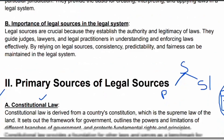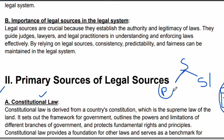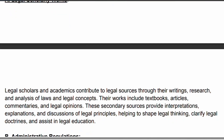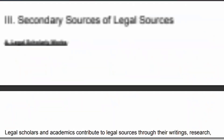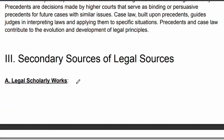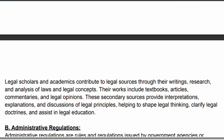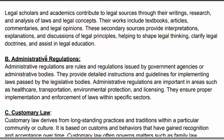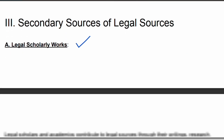Now we will discuss the secondary sources. In the secondary sources, there are three things. The first is scholarly work — what legal workers and jurists have written, then administrative regulations, and customary law. These are your secondary sources. Legal scholarly works are an important part.